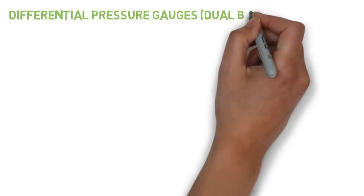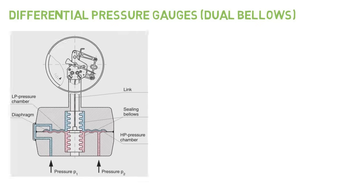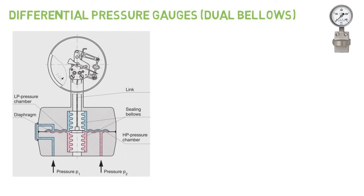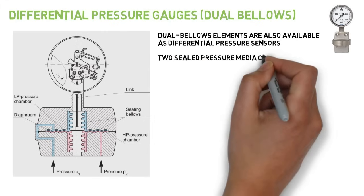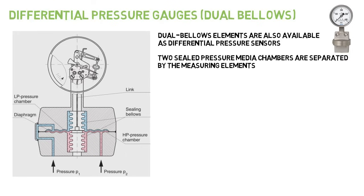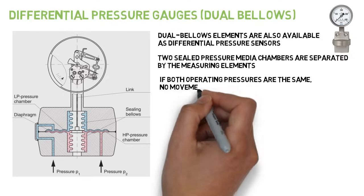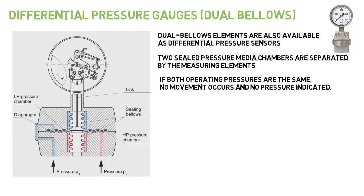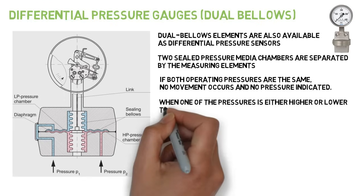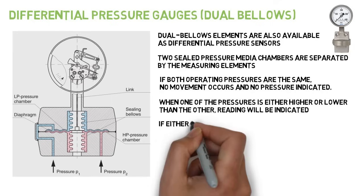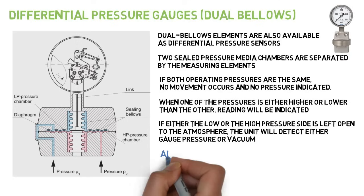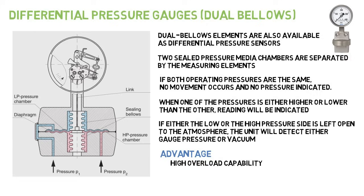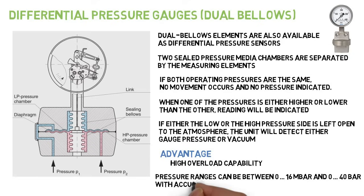Differential pressure gauges using dual bellows. Dual bellows elements are also available as differential pressure sensors. Two sealed pressure media chambers are separated by the measuring elements. If both operating pressures are the same, no movement of the measuring element occurs and no pressure will be indicated. When one of the pressures is either higher or lower than the other, a differential pressure reading will be indicated. If either the low or high pressure side is left open to the atmosphere, the unit will detect either gauge pressure or vacuum pressure. Pressure ranges can be between 0 to 16 mbar and 0 to 40 bar, with accuracy classes of 0.6 to 2.5.